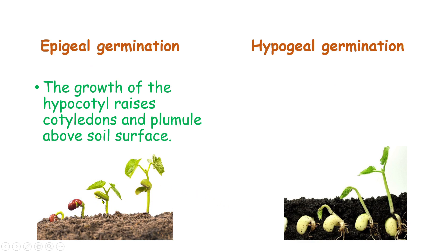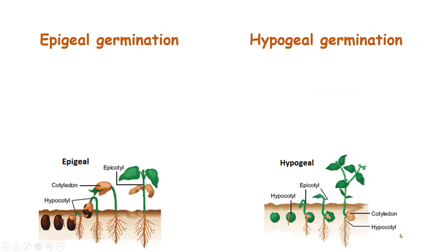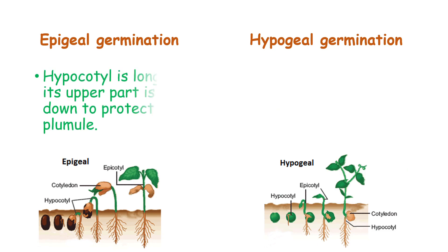In hypogeal germination, because of very little hypocotyl growth, the cotyledons do not emerge above the soil surface. In epigeal germination, the hypocotyl is long and its upper part is curved down to protect the plumule.